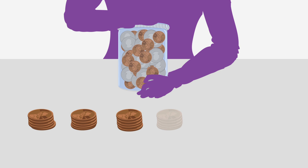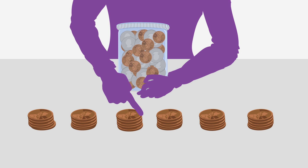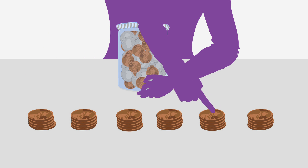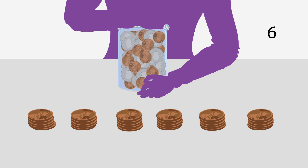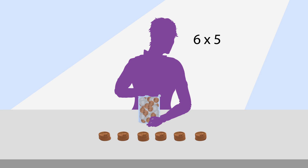First, you might group pennies into stacks of 5. Then you would count how many stacks there are. In this case, they add up to 6. Then you'd multiply that number by 5. Your final count of pennies is a multiple of 5. It's often useful on the test to find multiples that two numbers share.